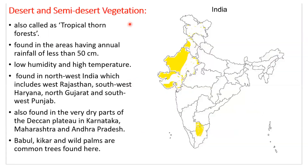Desert and semi-desert vegetation is found in areas having less than 50 centimeters of annual rainfall, very low humidity, and high temperature. It is found in northwest India including West Rajasthan, Southwest Haryana, North Gujarat, and Southwest Punjab, and also in very dry parts of the Deccan Plateau in Karnataka, Maharashtra, and Andhra Pradesh. Babul, kikar, and wild palms are common trees found here.